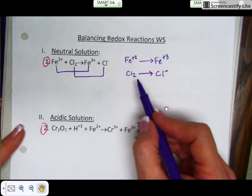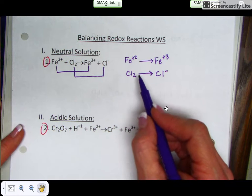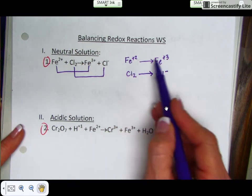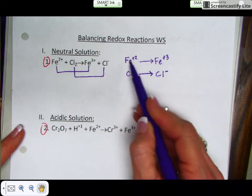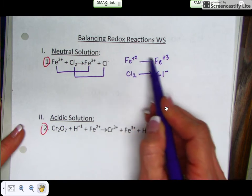The second step is to balance all atoms except for hydrogens and oxygens with coefficients. So if you look at the irons, there's one iron on each side, so the irons are balanced in this half reaction.